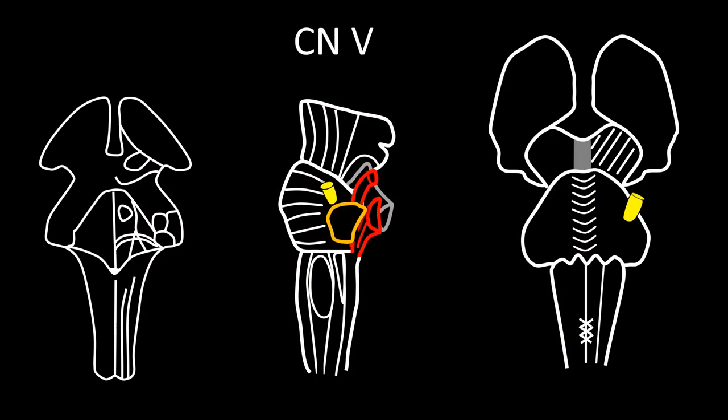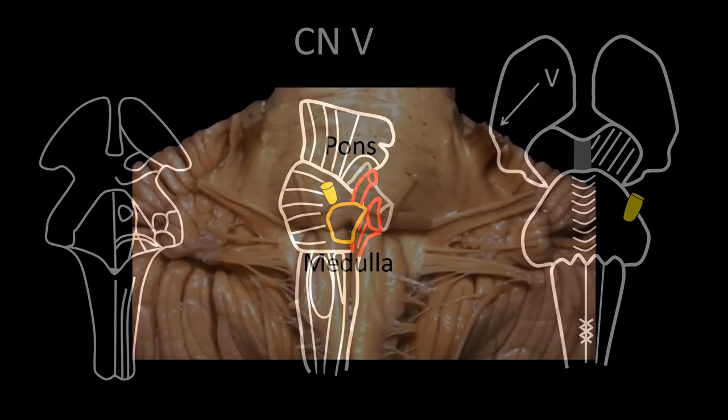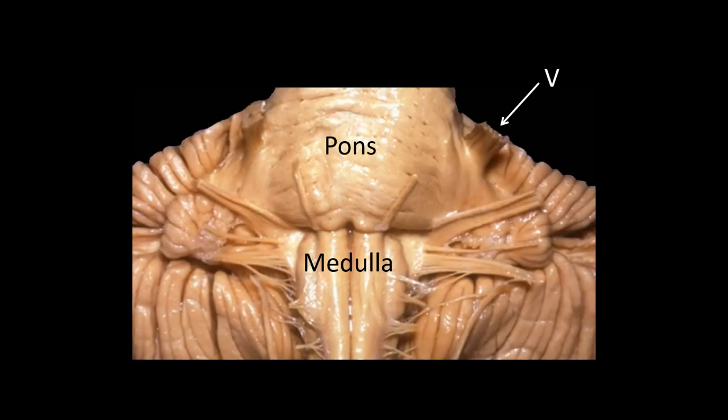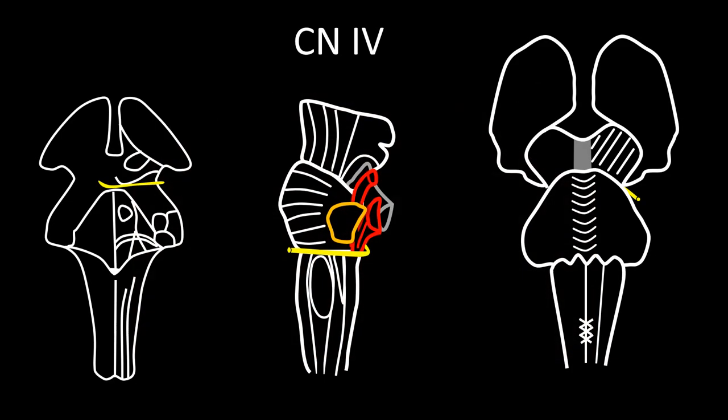Cranial nerve five, the trigeminal, emerges from the pons just before the external formation of the middle cerebellar peduncle. This is a view that shows the emergence of the trigeminal nerve. The trigeminal nerve is the only cranial nerve that emerges through the back of the brain stem and then goes to the opposite side, innervating the superior oblique muscle contralateral to its origin — the arrow is pointing to it in the lateral view and in the anterior view.